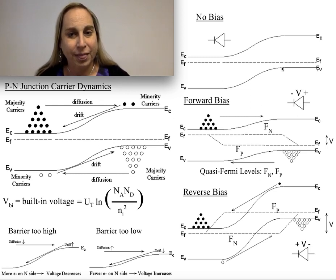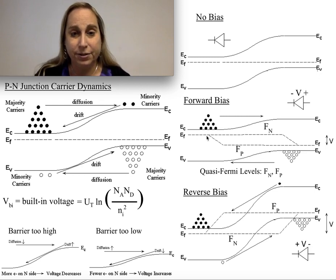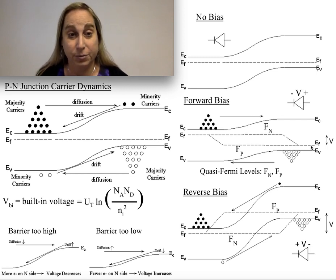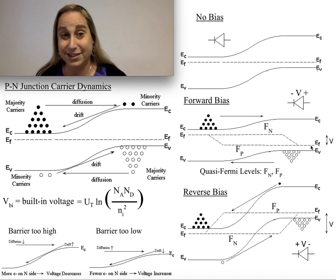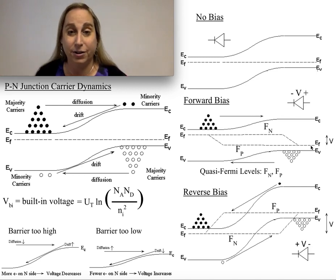What happens is that, effectively, for the N material and the P material, their effective Fermi levels move. Now, if you're being really rigorous, you're always going to say, anytime you have more than one Fermi level, it's not equilibrium. Fine. We're going to get to that in a moment.